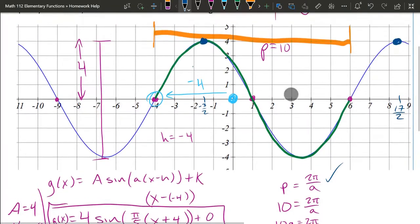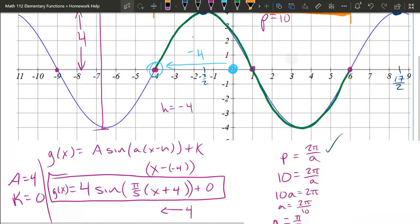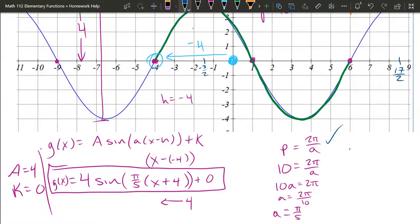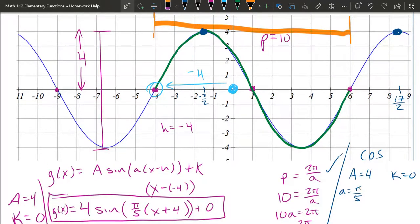The vertical stretch, same as before, is shifted vertically. A is still going to be 4. Not shifted vertically, stretched vertically by 4. Shifted vertically, 0, so k still equals 0. Little a is still pi over 5. And we're doing all of this in cosine here. All right, the last thing is the horizontal shift. Clearly, it's different.